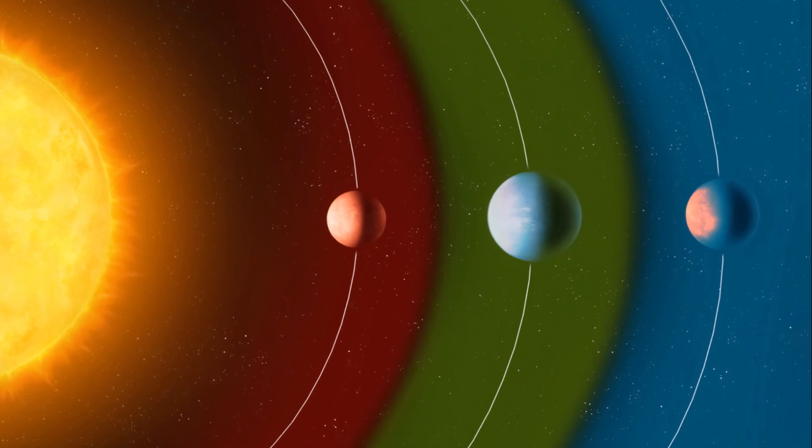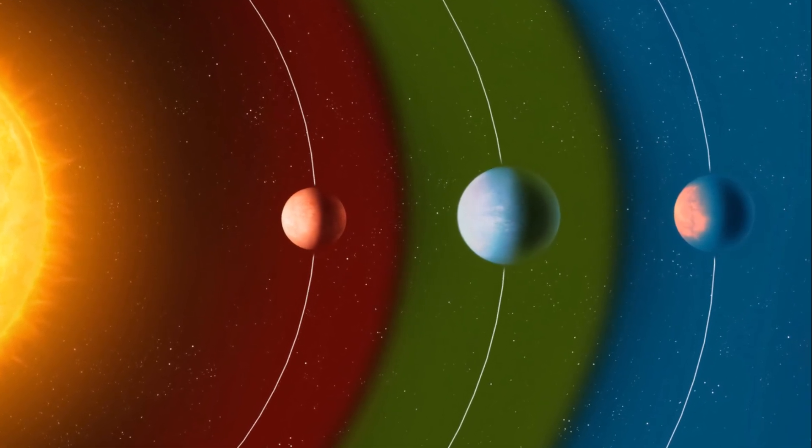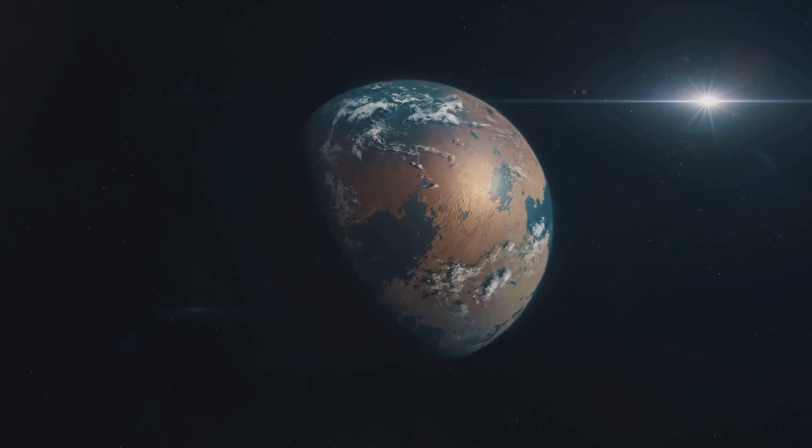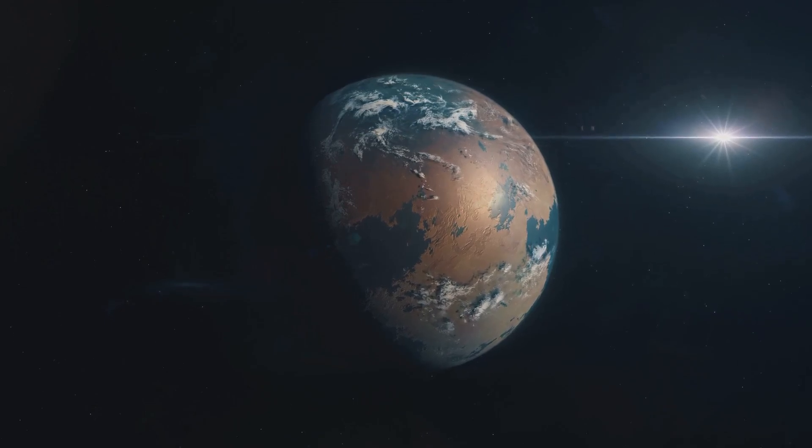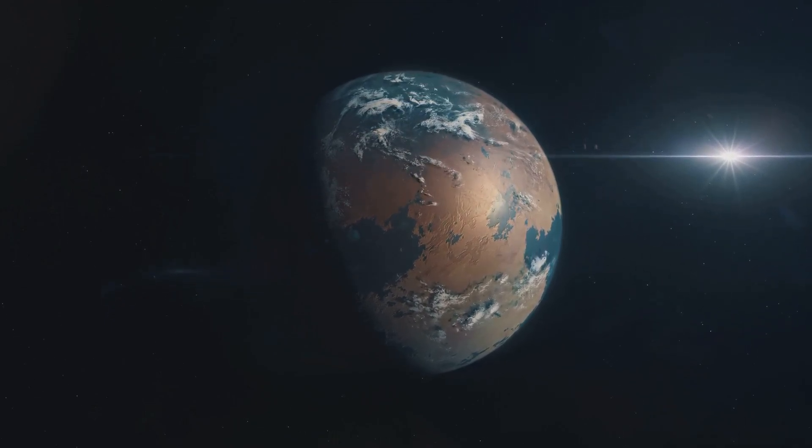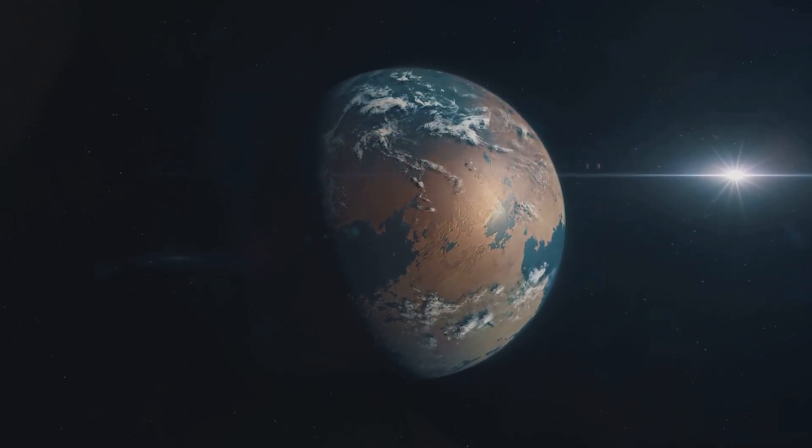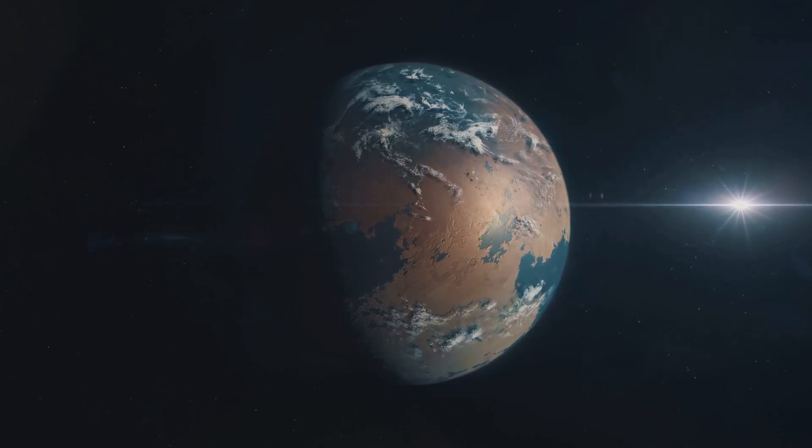But the real excitement comes from the exoplanet's location in the so-called habitable zone. This is the sweet spot where conditions might be just right for liquid water to exist on the planet's surface. And as we know, where there's water, there's the potential for life.